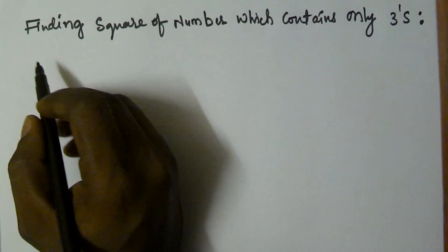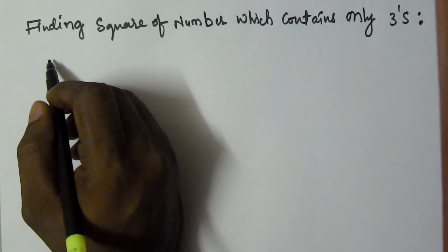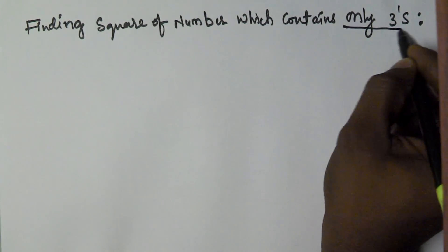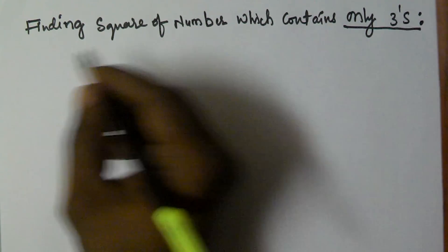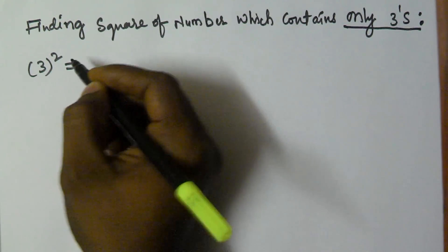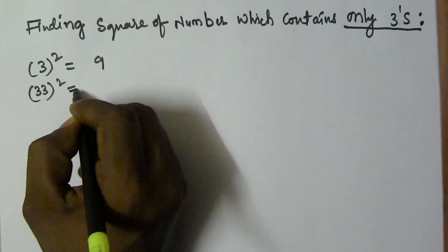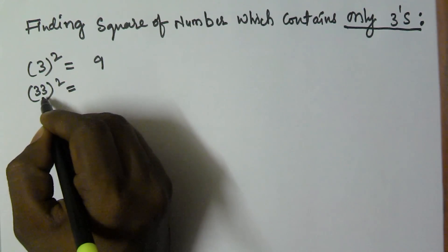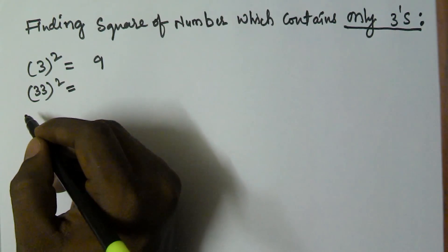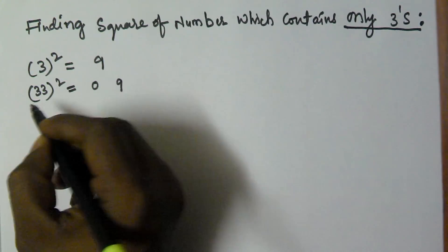Hello friends, in this video I am going to show you how to find or remember the square of a number which contains only 3s. So you know 3 squared is 9. For 33 squared, first take 3 squared which is 9, but I am writing it as 09.